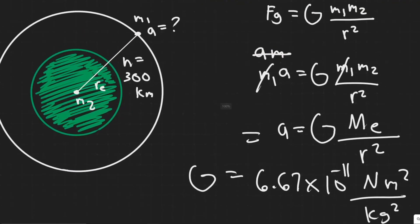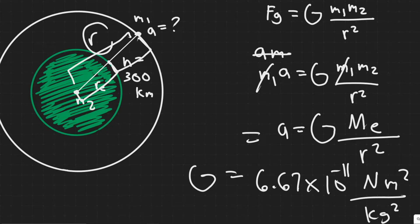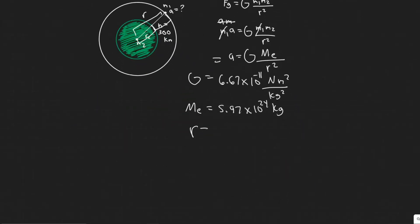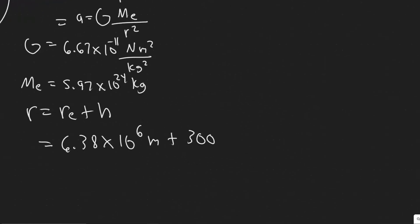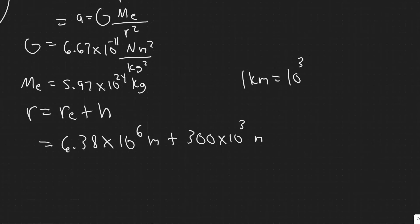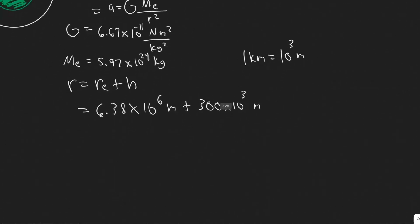The radius is the distance between the two objects, measured from the center. We have the radius of the Earth, plus the distance from the surface to the astronaut, so r equals Re plus h. The radius of the Earth is 6.38 times 10 to the 6 meters, and we add the height of 300 kilometers, which we convert to meters as 300 times 10 to the 3 meters. That sum gives us our r.